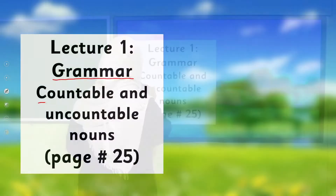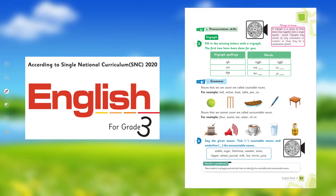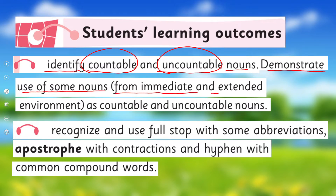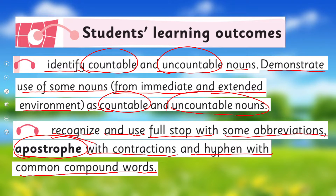Under the title of grammar, we are going to learn about countable and uncountable nouns, and we'll cover page number 25 of your book. In English for Grade 3, I have already taught you about countable and uncountable nouns. Today we are going to learn further: to identify countable and uncountable nouns, demonstrate use of some nouns from immediate and extended environment as countable and uncountable nouns, and recognize and use apostrophe with contractions. Our focus for today's lecture will be apostrophe with contraction.